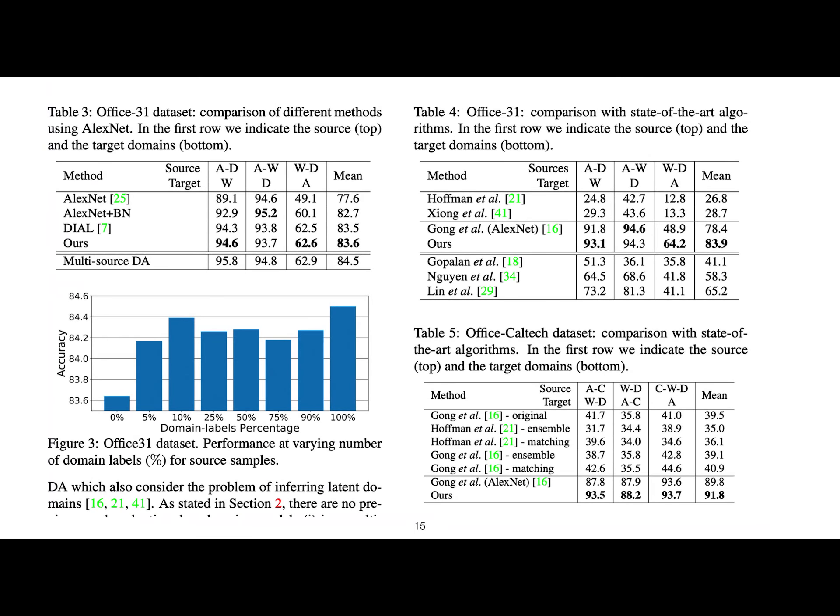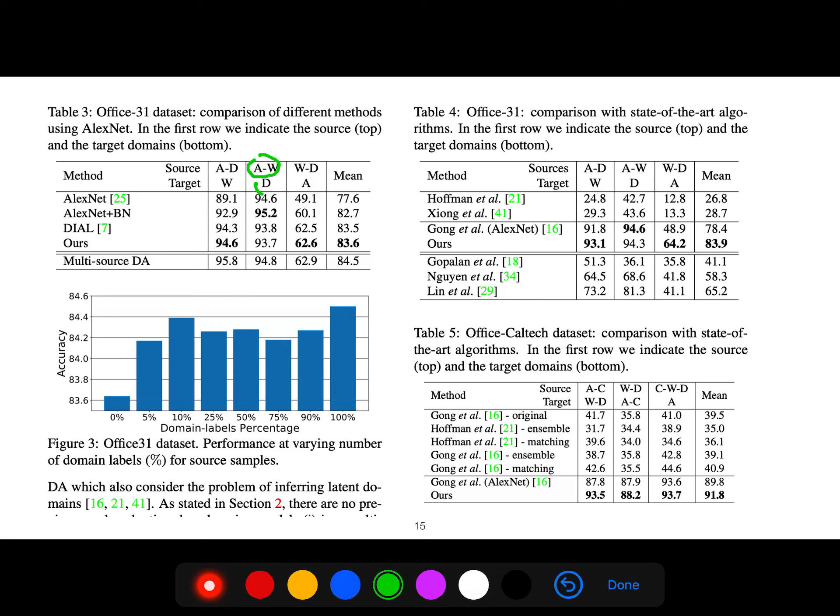So these are the Office datasets, comparison of different methods using AlexNet. You see different source and target. For example, if you go from this source to this target, you will see for this paper the accuracy. Different datasets like Office-31, Office-Caltech datasets. So we see some of them when we go from different sources to different targets, we have different performance because some of them are easier because of the datasets, because of other important things.